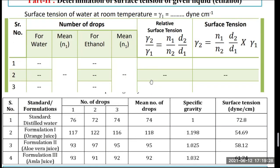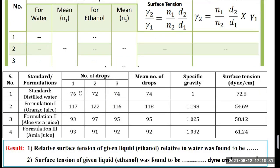Write an observation table with three observations. For distilled water, the number of drops for a 10 ml volume were 76, 72, and 74, giving a mean of 74 drops. The specific gravity of water is 1. The surface tension of water is 72.8 dynes per centimeter.